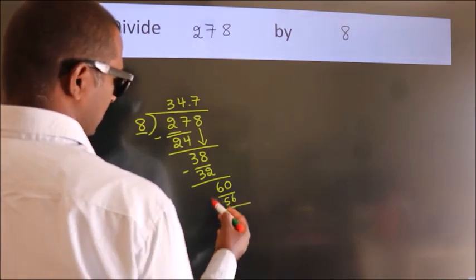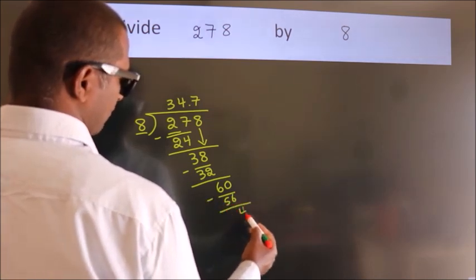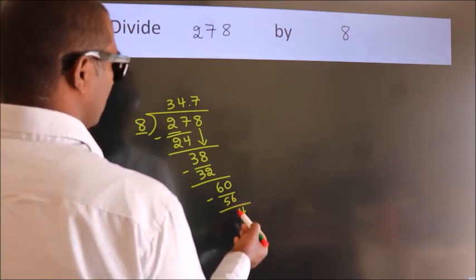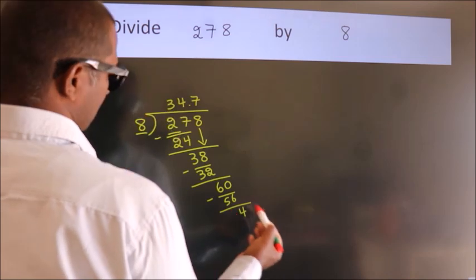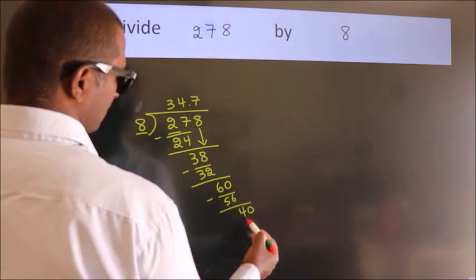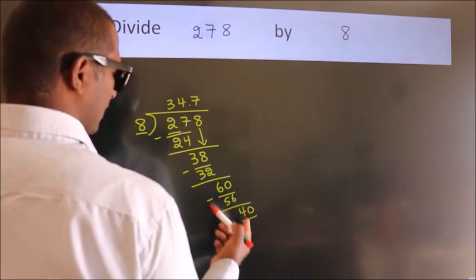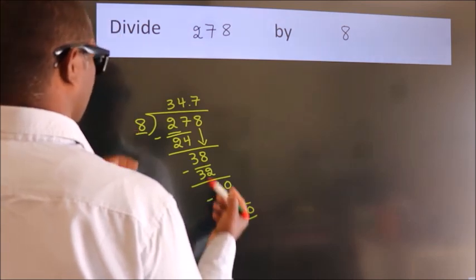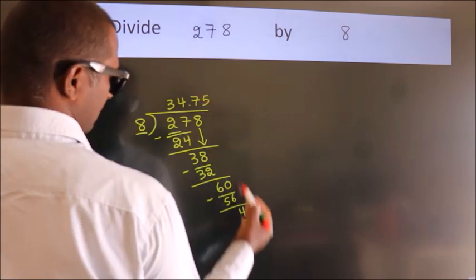Now we subtract. We get 4. After this, we already have the decimal, so directly take 0. So, 40. When do we get 40 in the 8 table? 8 fives, 40.